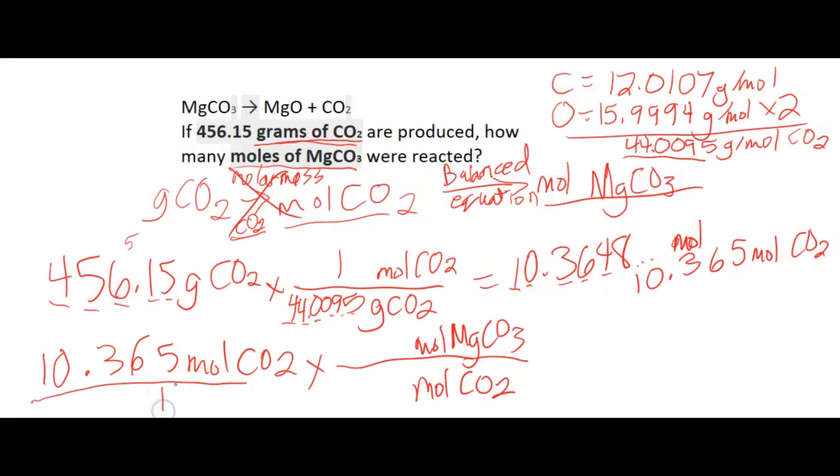So we line everything up. We look at MgCO3. There's no number there, so the coefficient is one. For CO2, there's no number there either. The coefficient is one. So I'm going to put ones in there. I do suggest put the numbers in so that you don't think that you missed a step.